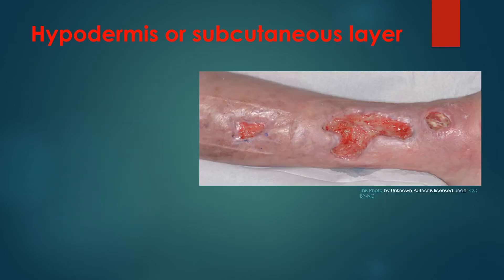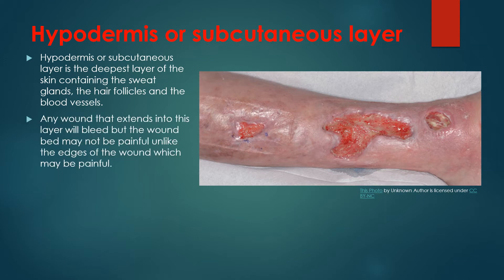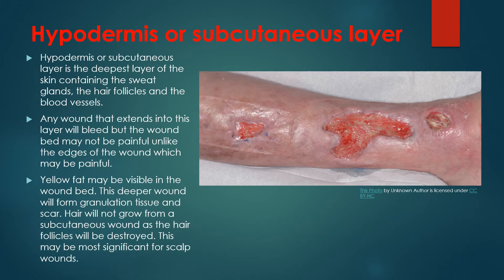Then the final layer: the hypodermis, or subcutaneous layer. It is the deepest layer of the skin and contains sweat glands, hair follicles, and blood vessels. Any wound that extends into this layer will bleed, but the wound bed may not be painful, unlike the edges of the wound, which can be very painful. Yellow fat may be visible in the wound bed. This deeper wound will form granulation tissue and scar. Hair will not grow from a subcutaneous wound, as the hair follicles will be destroyed.